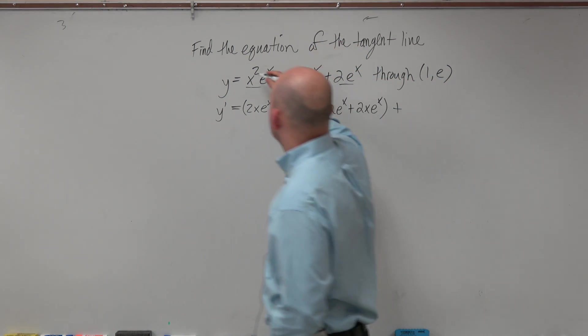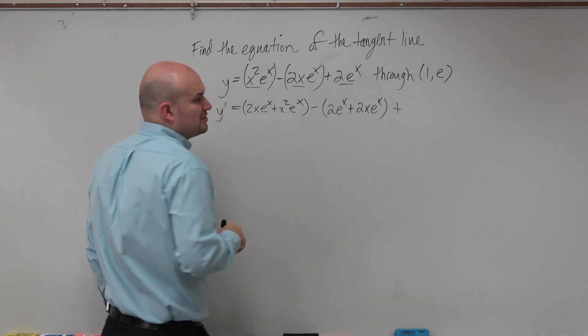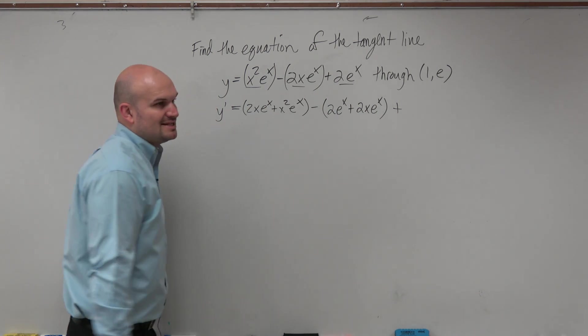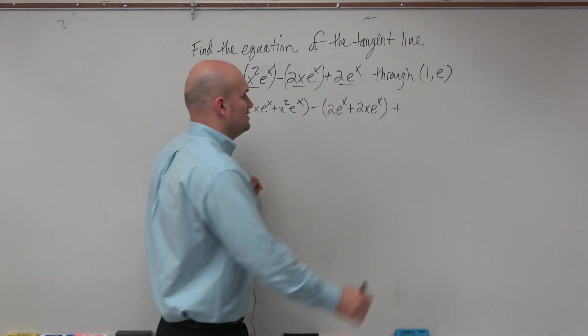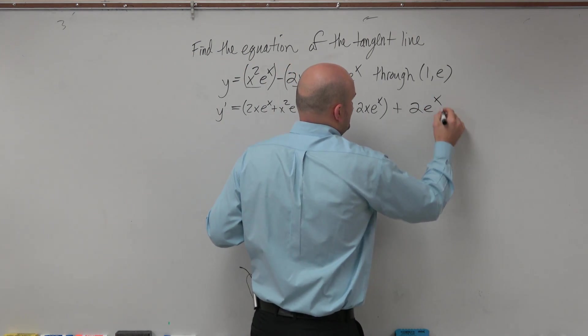So basically, notice what I did - I took the derivative of each one of those parentheses. Now this one is not so bad, because the derivative of 2e^x is just going to be 2e^x.